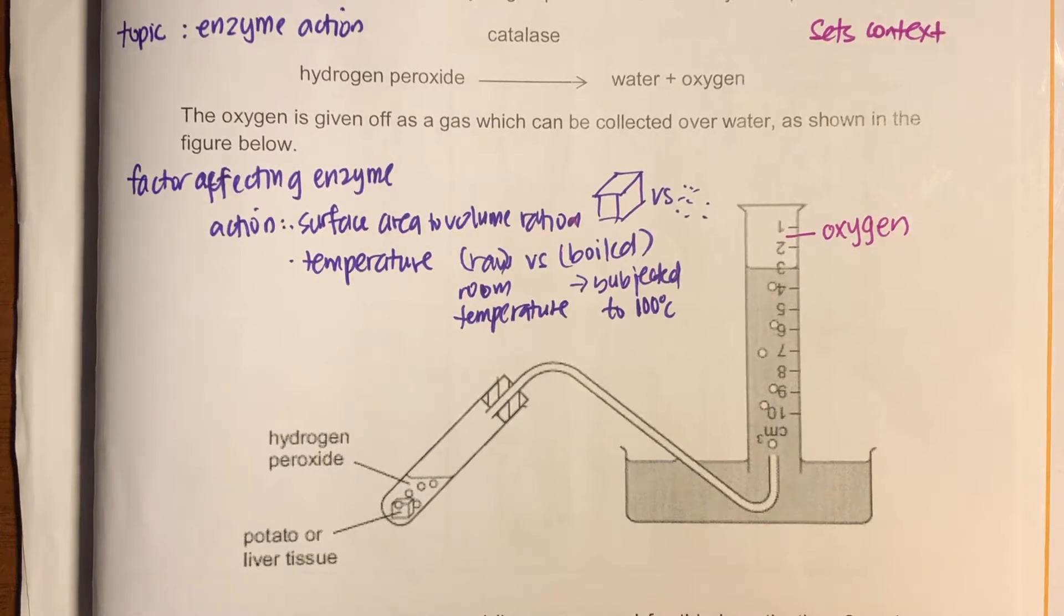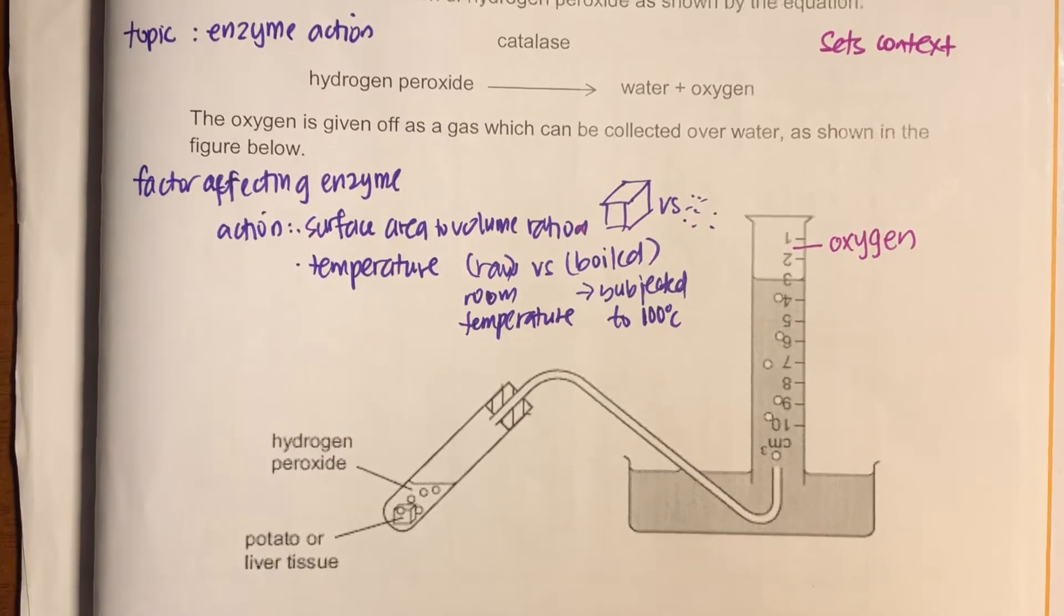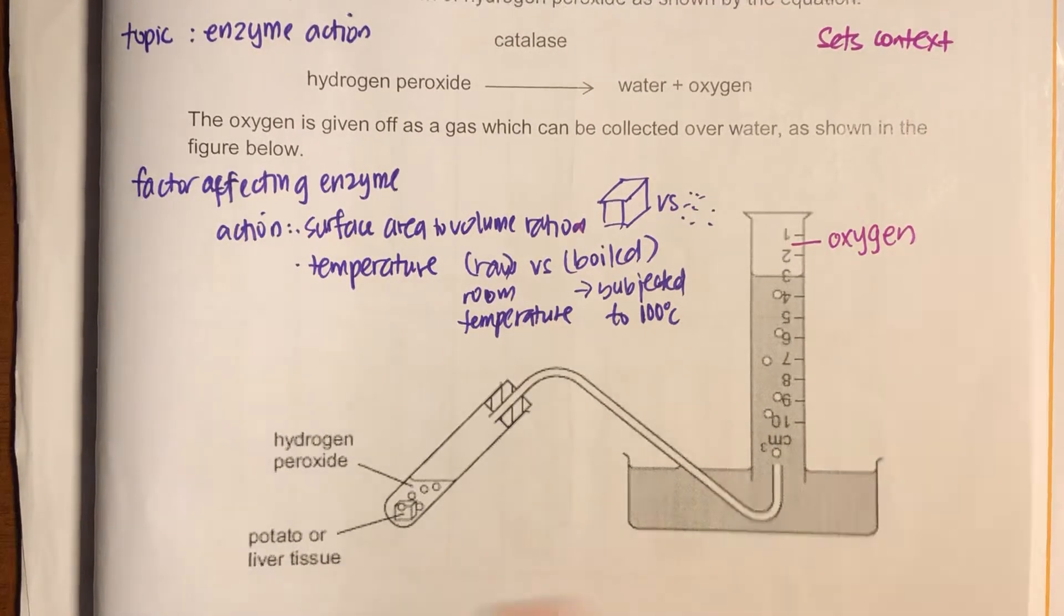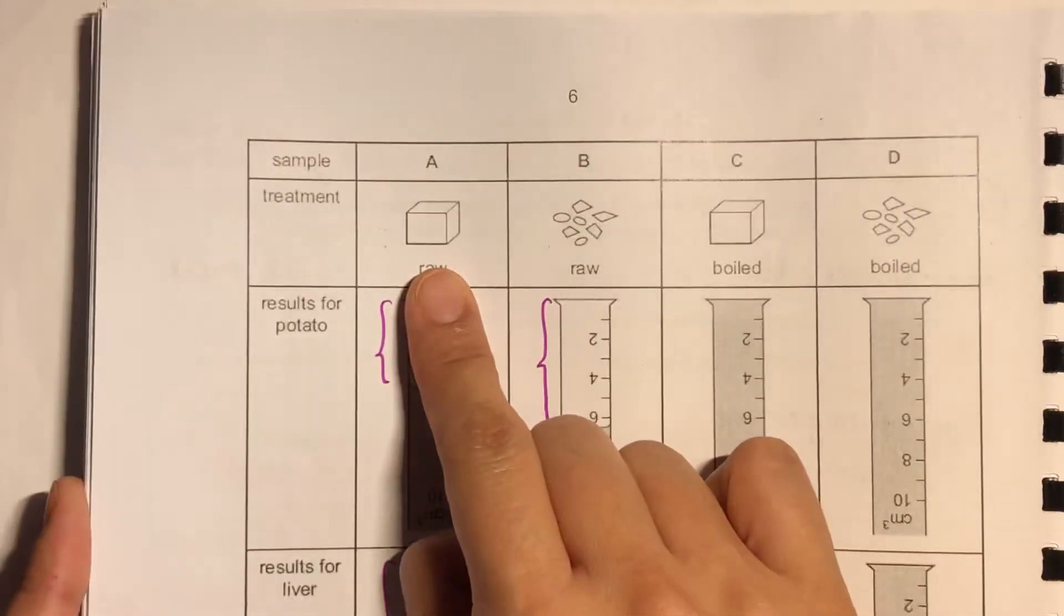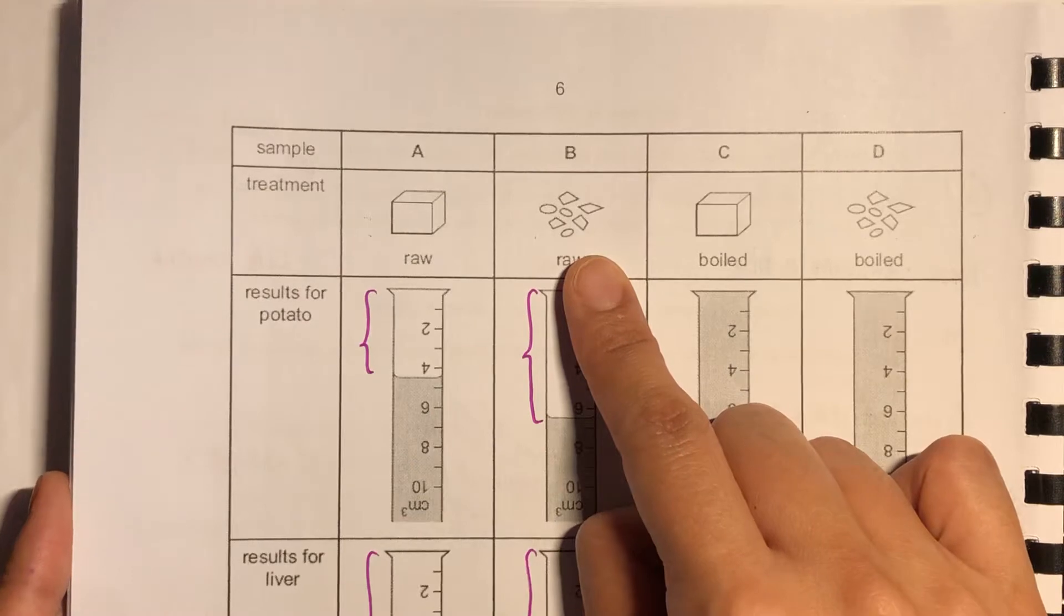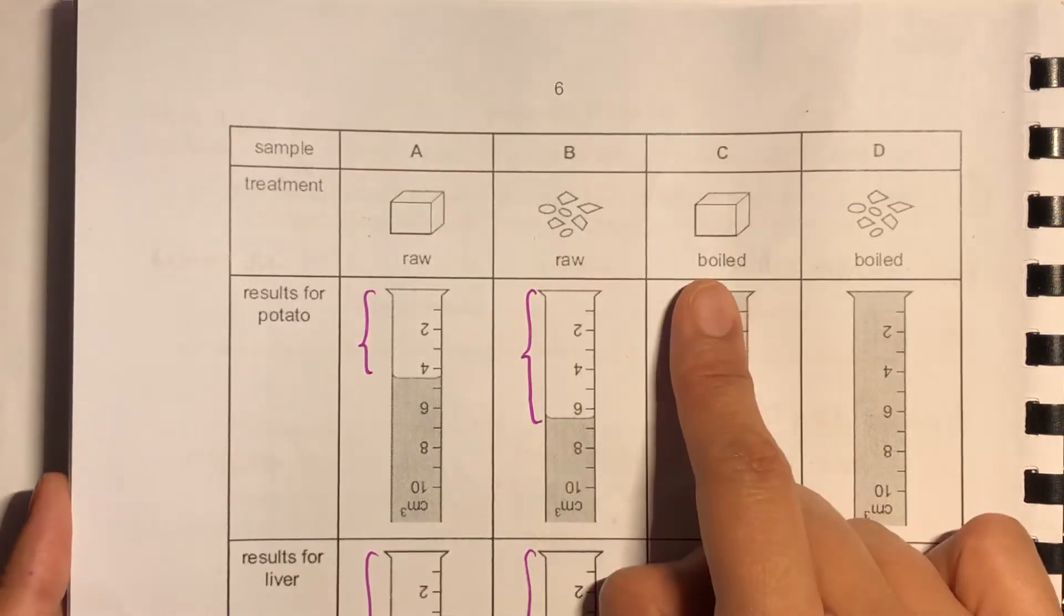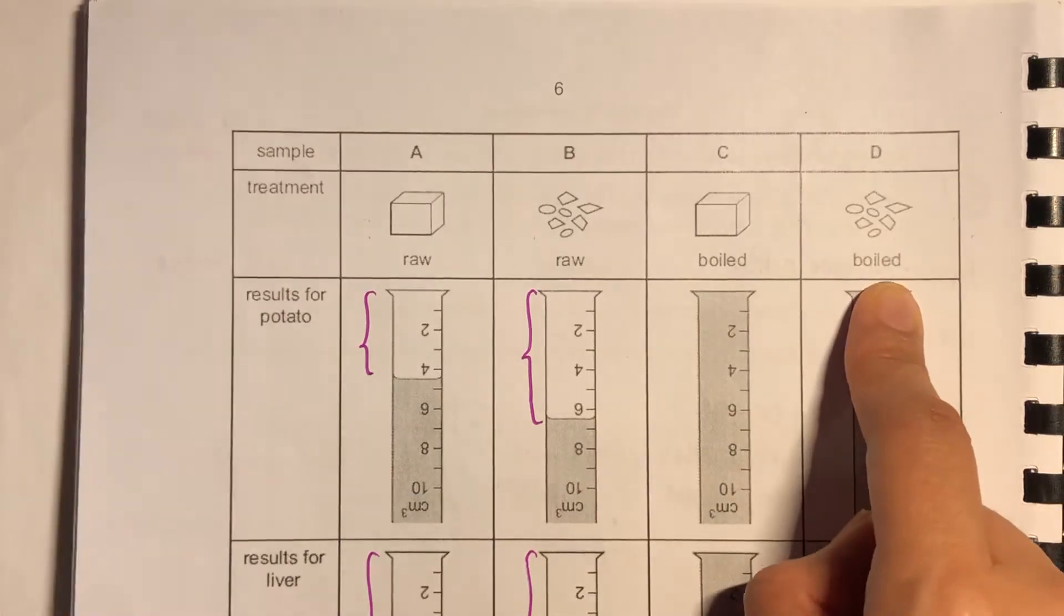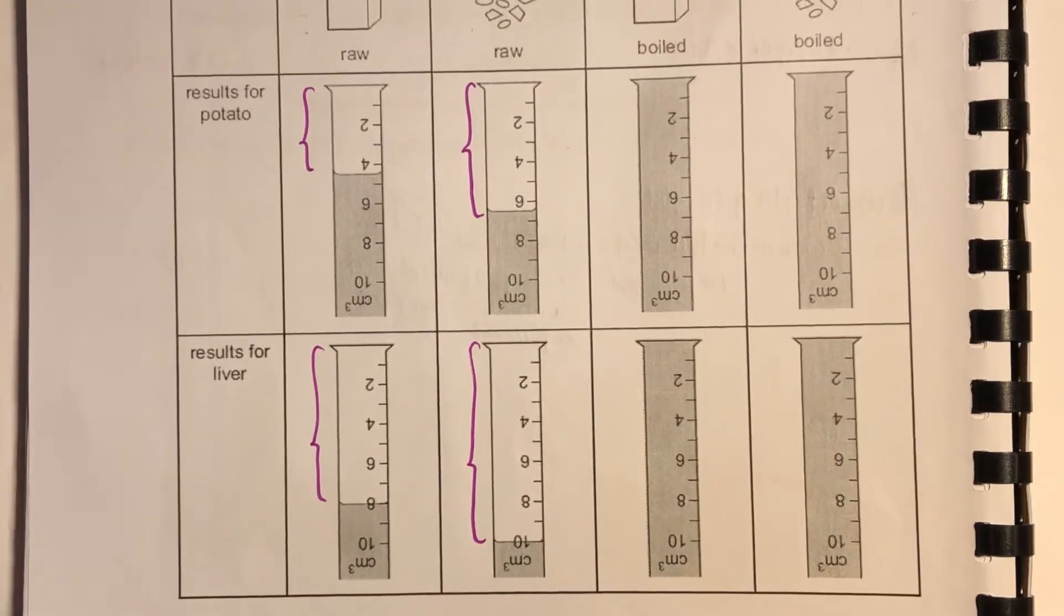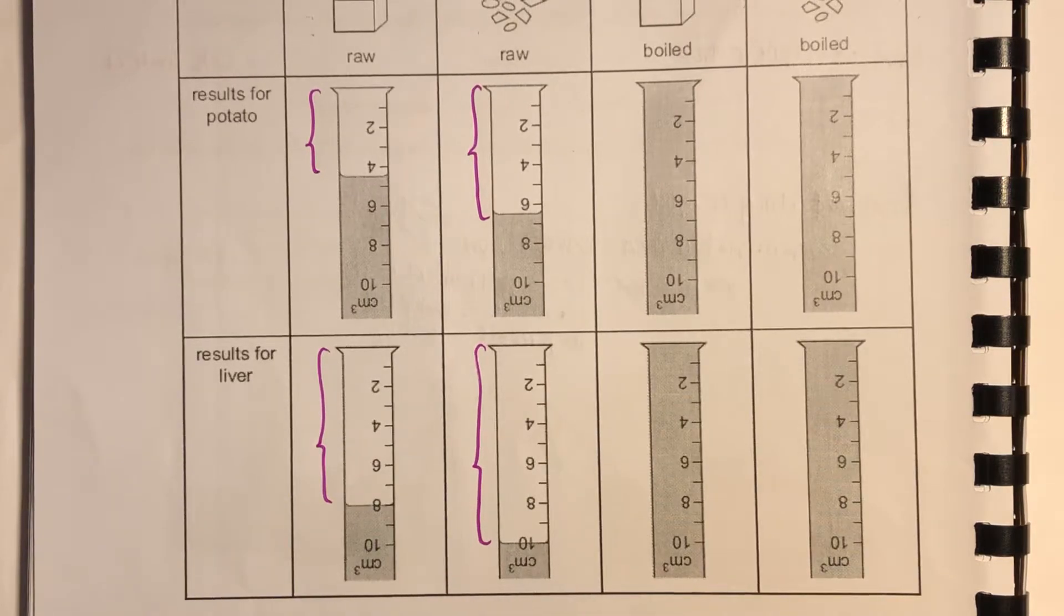So it goes on to say what they have done with the other portion. So one, they started with a cube and the other one with smaller pieces. Then the other cube was boiled and the smaller pieces were boiled. And this was repeated for the liver.